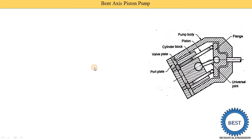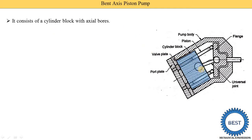Now we understand the components of the bent axis piston pump. It consists of a cylinder block with radial bores. Here you see this is the cylinder block. Inside the cylinder block, various holes are provided and these holes are called bores. These bores are parallel to the axis of the cylinder — that is called the axial bore. Here you see two holes or bores are provided.